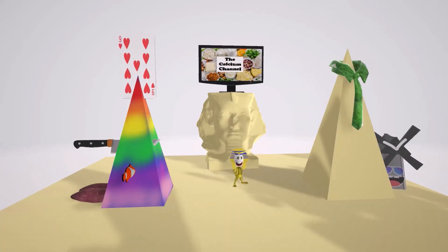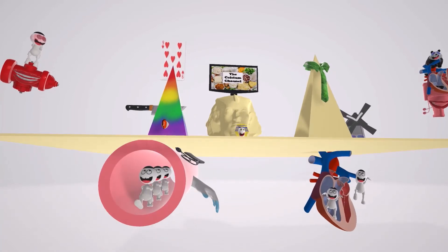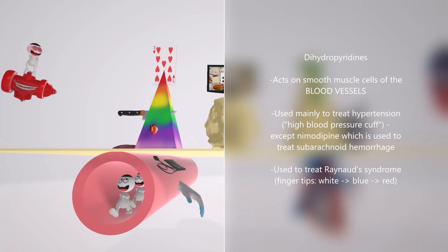These drugs — the dihydropyridines — mainly act on the smooth muscle cells of blood vessels. We see the Jews escaping through a tunnel that looks like a blood vessel, to help us remember that the dihydropyridines act mainly on smooth muscle cells of blood vessels. The dihydropyridines are used mainly to treat hypertension — that's why we see a blood pressure cuff on top of this vessel-looking tunnel. The high blood pressure cuff for high blood pressure. They treat hypertension by acting on the arterial smooth muscle.